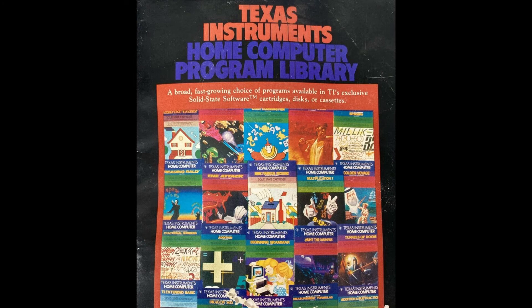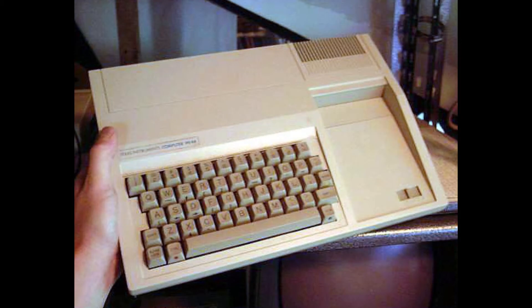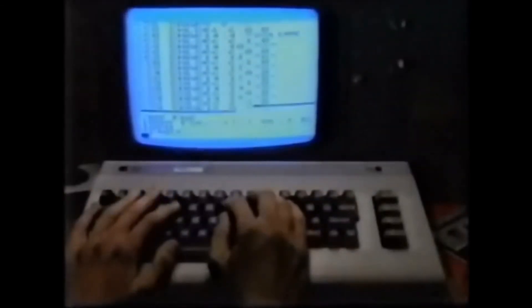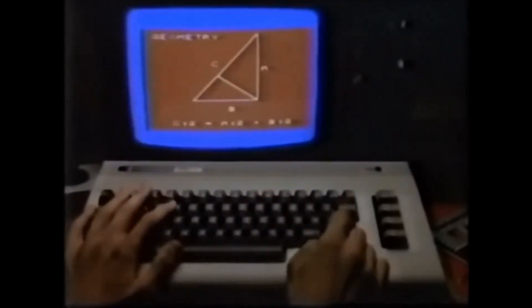Around this time TI decided to drop the 99/2 in favor of a cost-reduced beige 99/4A replacement that had circuitry to lock out unlicensed software. The 99/6 never solved its floppy problem. The 99/8 was just around the corner. There was a lot of hope at TI — they finally turned a small profit on the computer in 1982. But the first quarter of 1983 saw Commodore drop the VIC all the way down to $100. With a manufacturing cost of $130 for TI versus $75 for Commodore's VIC, competing was impossible.